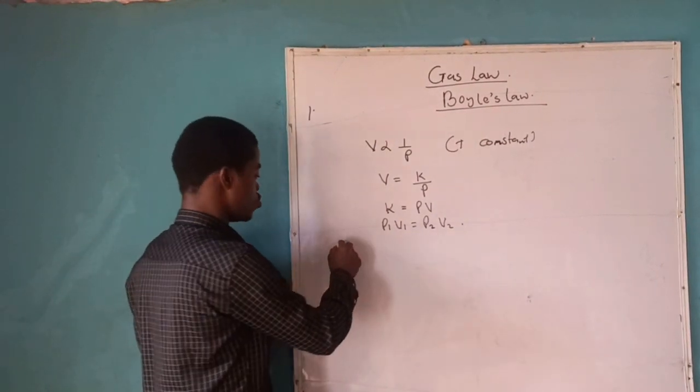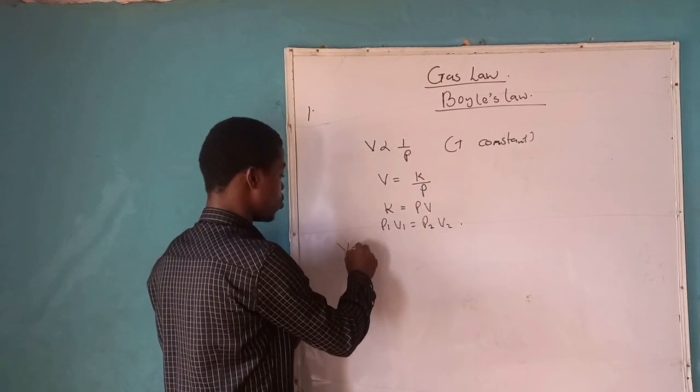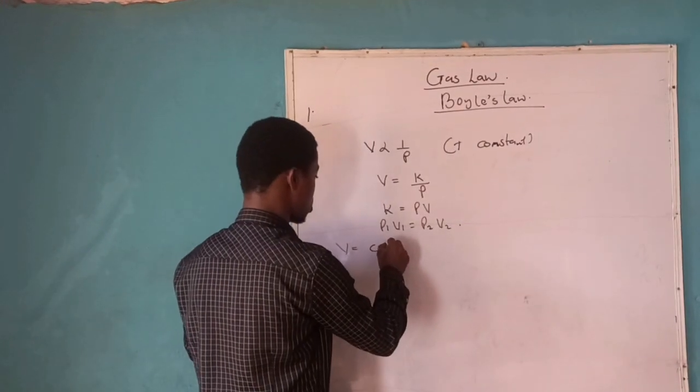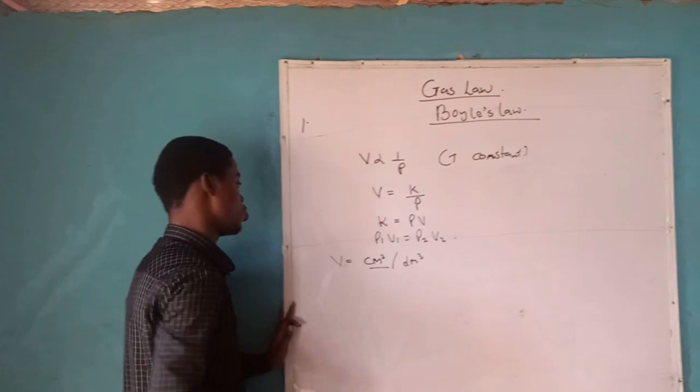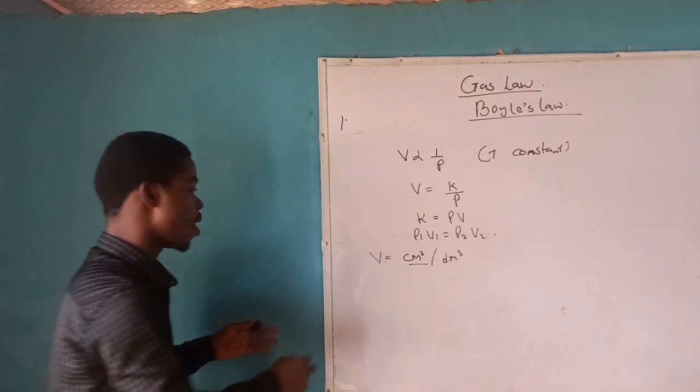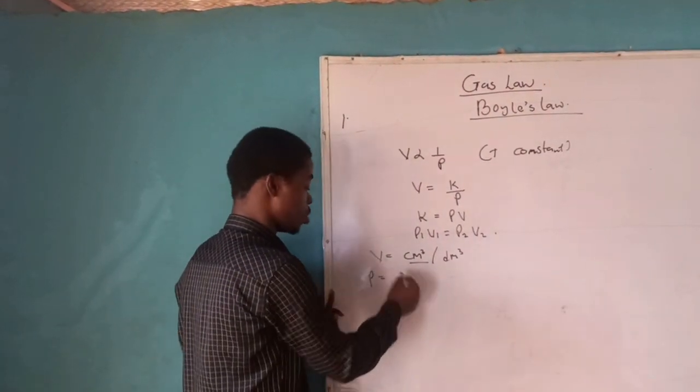And then there are some units that we need to make sure that we are aware of. The volume has a unit of centimeter cube. You can also have DM cube, but mostly it's centimeter cube used for Boyle's law. While the pressure has like three to four units.